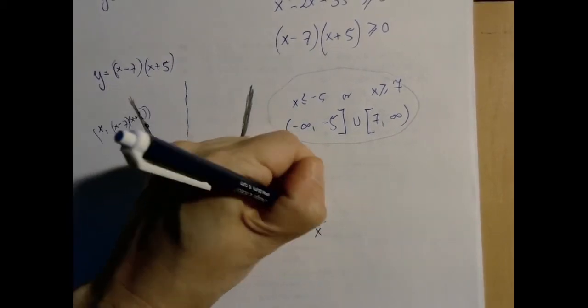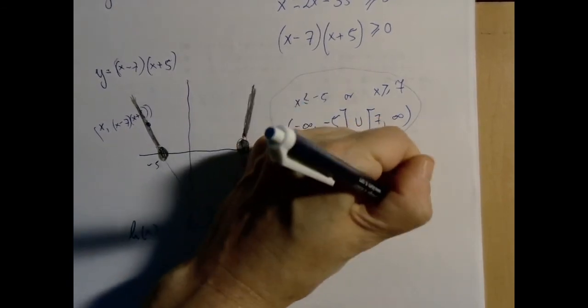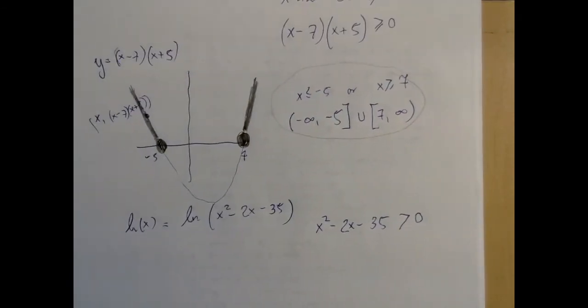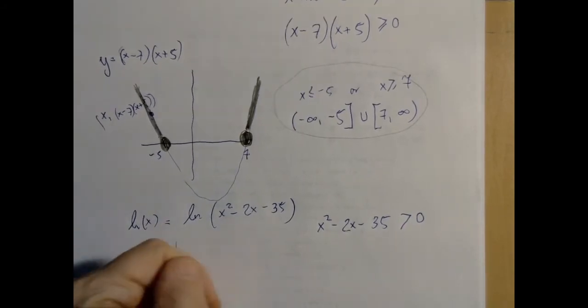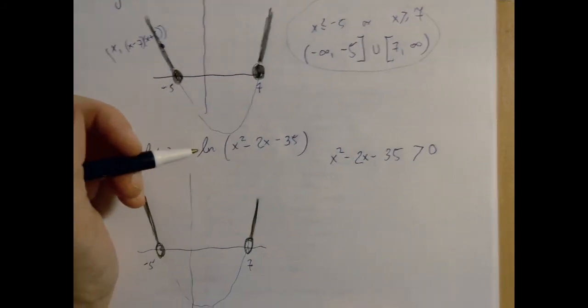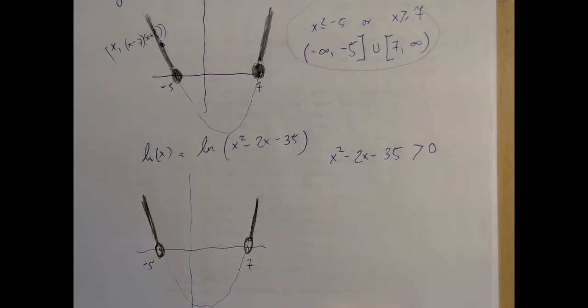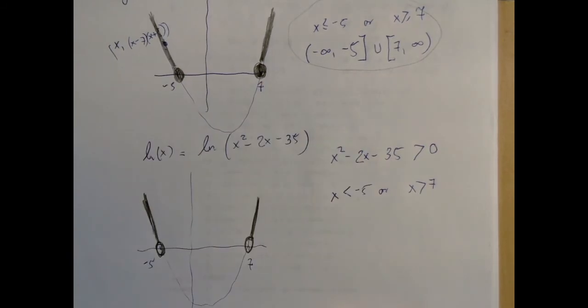So now we write the quadratic inequality, almost identical to the previous one, but now the inequality is strict. We are not allowing this thing to be equal to zero. Which means we are going to look at the same graph with the same x intercepts, only the endpoints are not included.